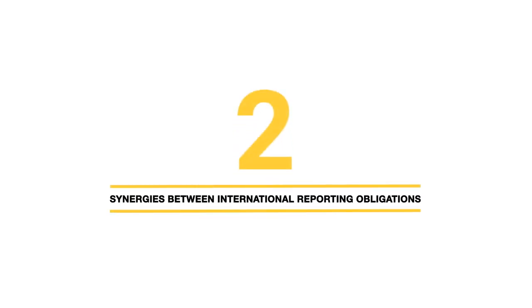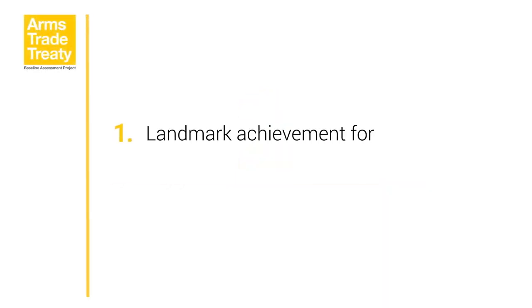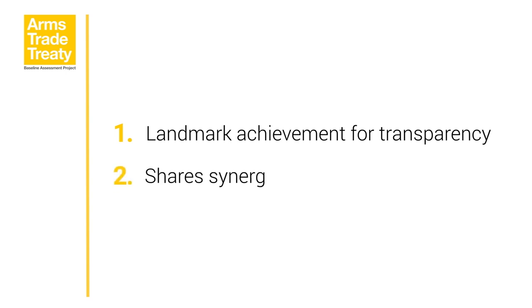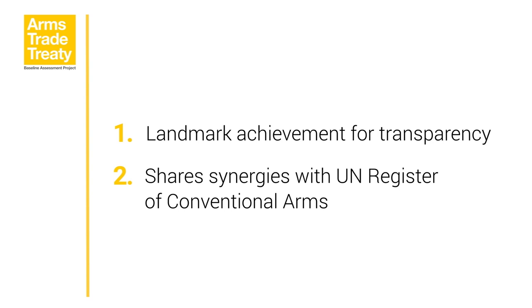Module 2: Synergies between International Reporting Obligations. The Arms Trade Treaty represents a landmark achievement for bringing greater transparency to the international arms trade, and it shares many synergies with existing international reporting obligations to help strengthen this norm. In particular, the ATT is linked to the United Nations Register of Conventional Arms, known simply as the UN Register. Article 13, Paragraph 3 of the ATT says that the annual report submitted to the Secretariat may contain the same information submitted by the State Party to relevant United Nations frameworks, including the UN Register of Conventional Arms.